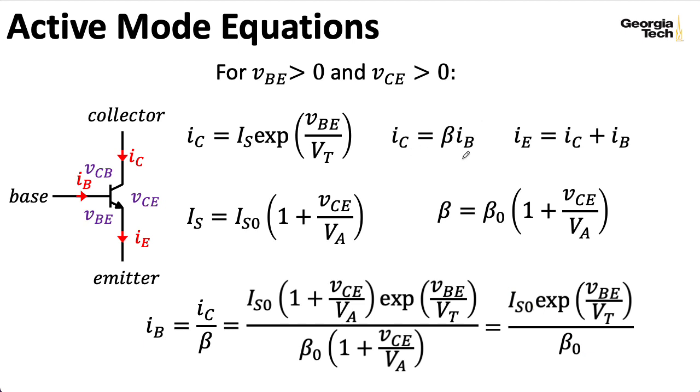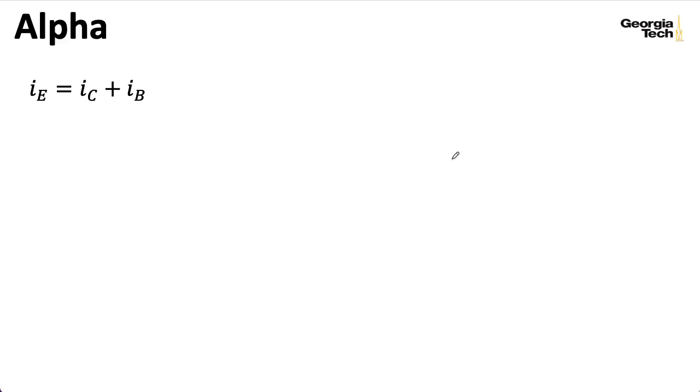So, beta relates the collector current to the base current. It's also convenient to define a parameter that we're going to call alpha that relates the collector current to the emitter current.